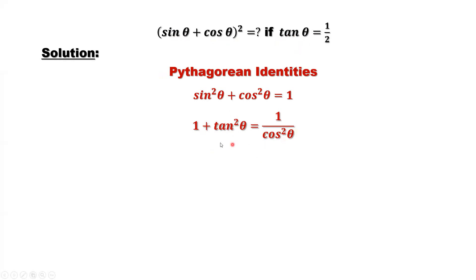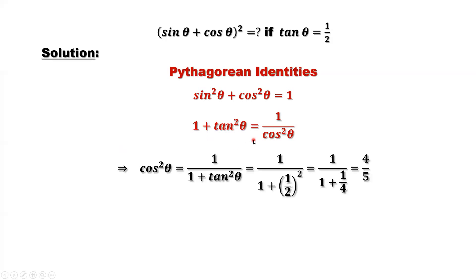Here is a formula — it's a connection. From this formula, if tangent theta is given, we can find cosine theta. Solving this formula, we find cosine theta squared equals one over one plus tangent theta squared. Tangent theta is given; we replace tangent theta by one-half. Simplifying, we find cosine theta squared equals four over five.